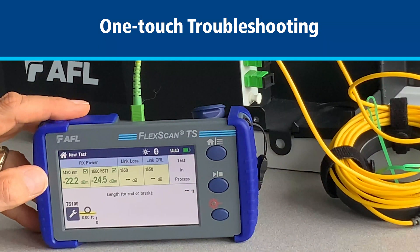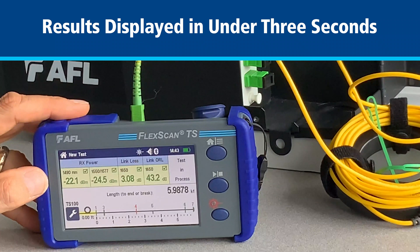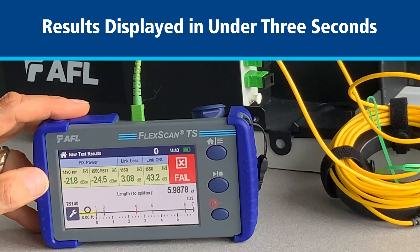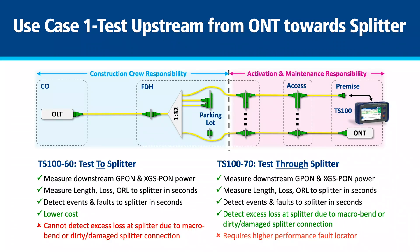Within 3 seconds, the TS100 will measure link length, loss and ORL to the splitter, and detect and report splices, connections and faults between the test access point and the splitter. The lower cost TS100-60 will test to the splitter but not through it. Consequently, it will not detect macro bends or poor connections causing excess loss at the splitter, since that excess loss is merged with the splitter's own loss.